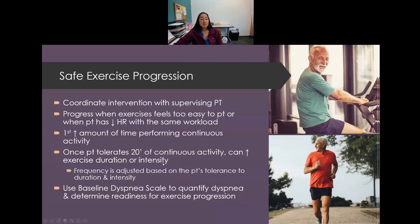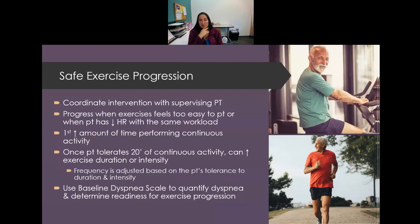Safe progression focuses first on increasing duration of continuous activity before increasing difficulty. Once the patient can tolerate 20 minutes of continuous activity, intensity and difficulty — such as resistance, hills, or stairs — can be increased. The baseline dyspnea scale helps determine readiness for progression: if the patient is barely tolerating current exercise, do not progress.